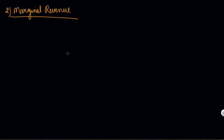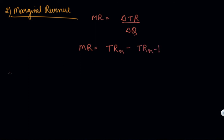Marginal revenue is the additional revenue that you get by selling additional quantities. Marginal revenue is the change in total revenue which results from the sale of one more unit of your commodity. To calculate marginal revenue, change in total revenue is divided by change in quantity, or MR = TR_n minus TR_{n-1}.